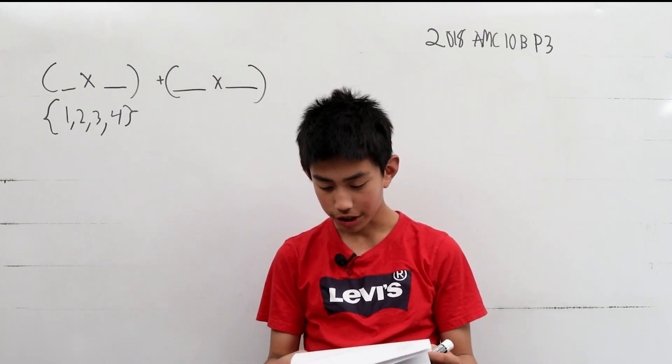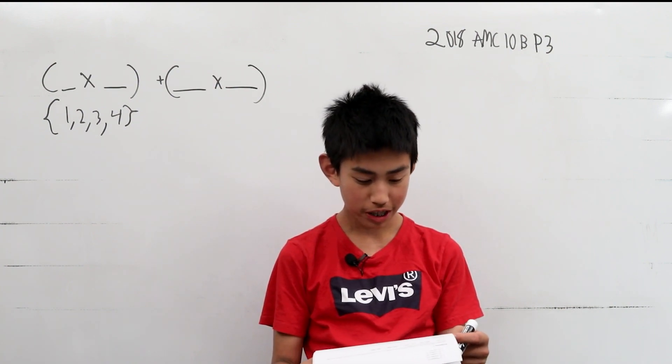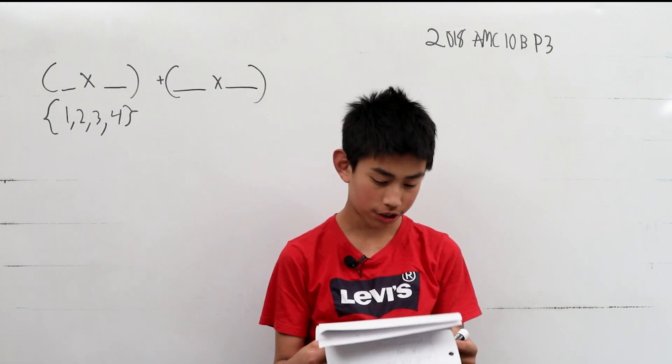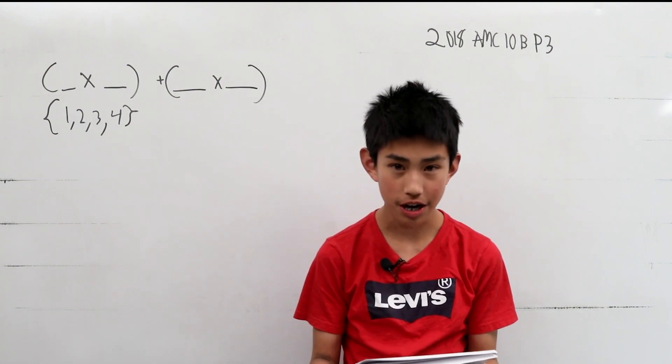in with one of the digits 1, 2, 3, or 4, with each digit being used once. How many different values can be obtained?